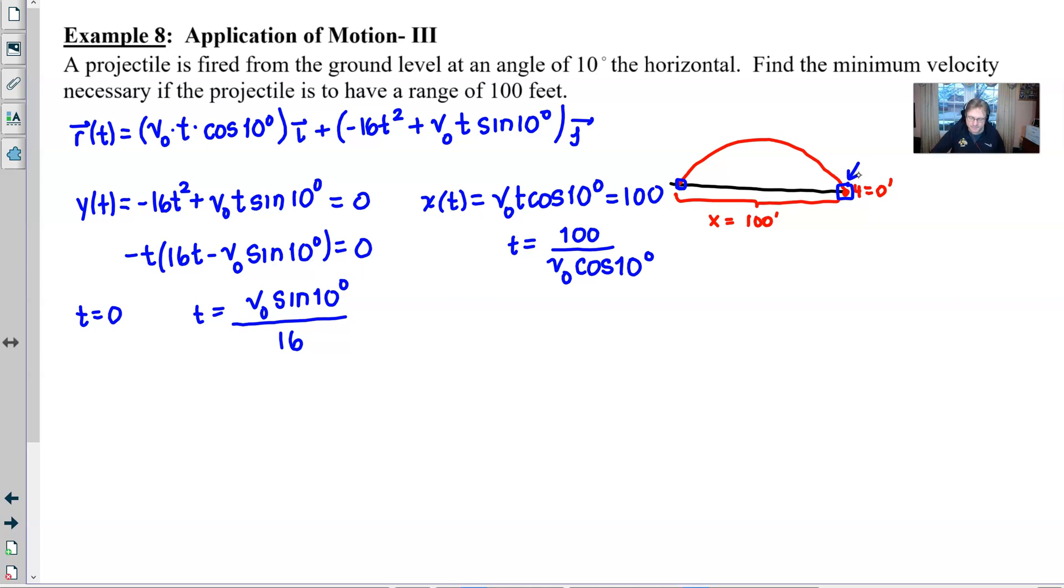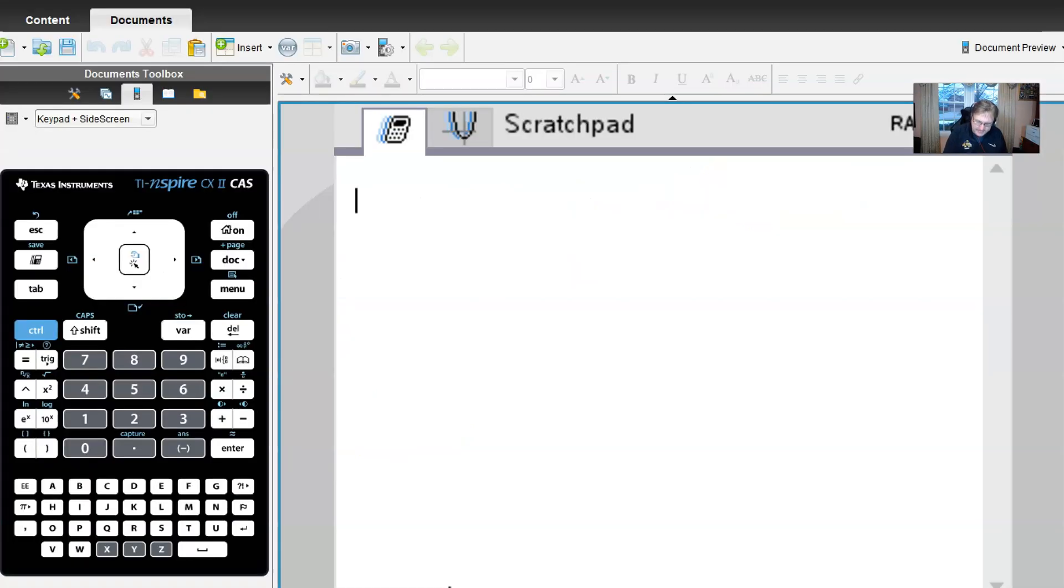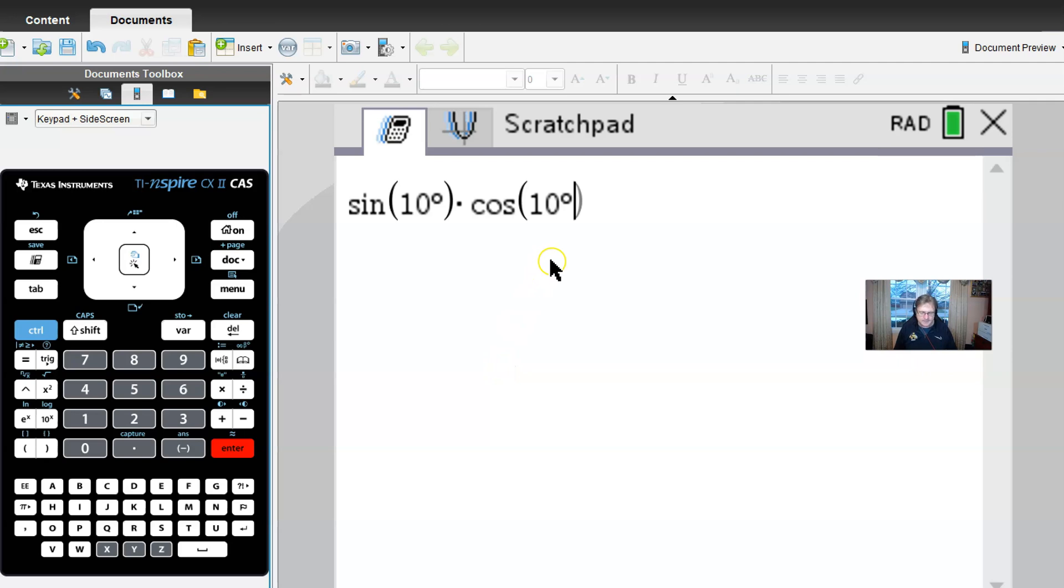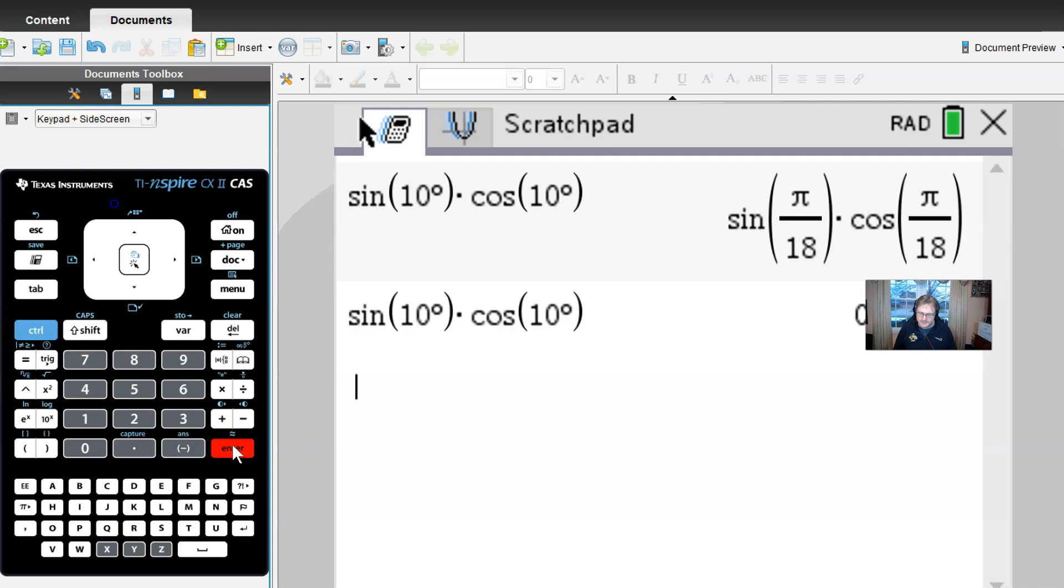So v₀ sine of 10 degrees over 16 is going to be equivalent to 100 over v₀ times the cosine of 10 degrees. I know that you CAS calculator users could probably solve this by entering it into your solve feature but I tell you what let's try it a different way. Let's cross multiply. We would get initial velocity squared times, and I tell you what, sine of 10 cosine of 10, what better time than right now to find out what those are equivalent to. So the sine of 10 degrees multiplied by the cosine of 10 degrees. Let's go degrees there. Notice I am in radian mode so I'm converting these to degrees with the symbols. And I would get this which upon changing to a decimal is 0.171.